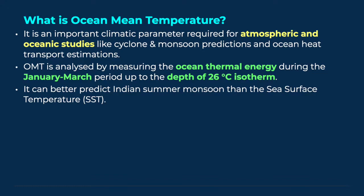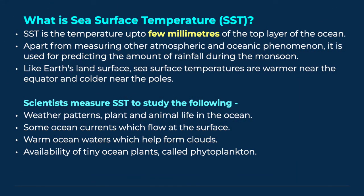OMT can better predict Indian summer monsoon than the sea surface temperature. What is sea surface temperature? It is the temperature up to few millimetres of the top layer of the ocean. Apart from measuring other atmospheric and oceanic phenomena, it is used for predicting the amount of rainfall during the monsoon. Like Earth's land surface, sea surface temperatures are warmer near the equator and colder near the poles.